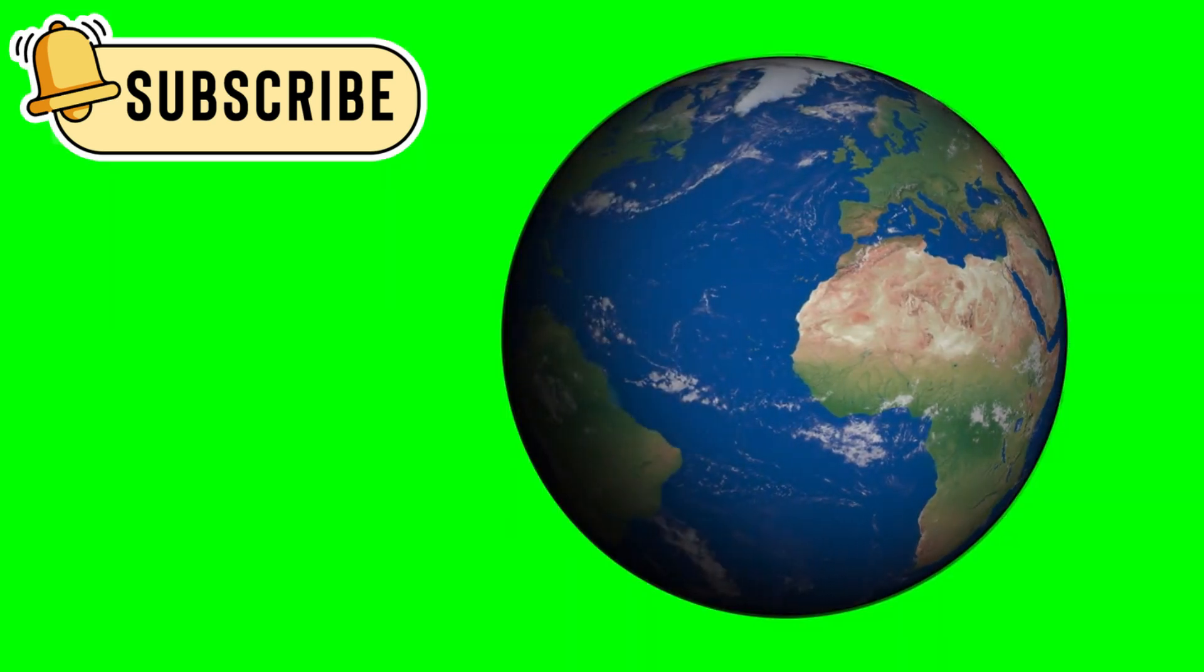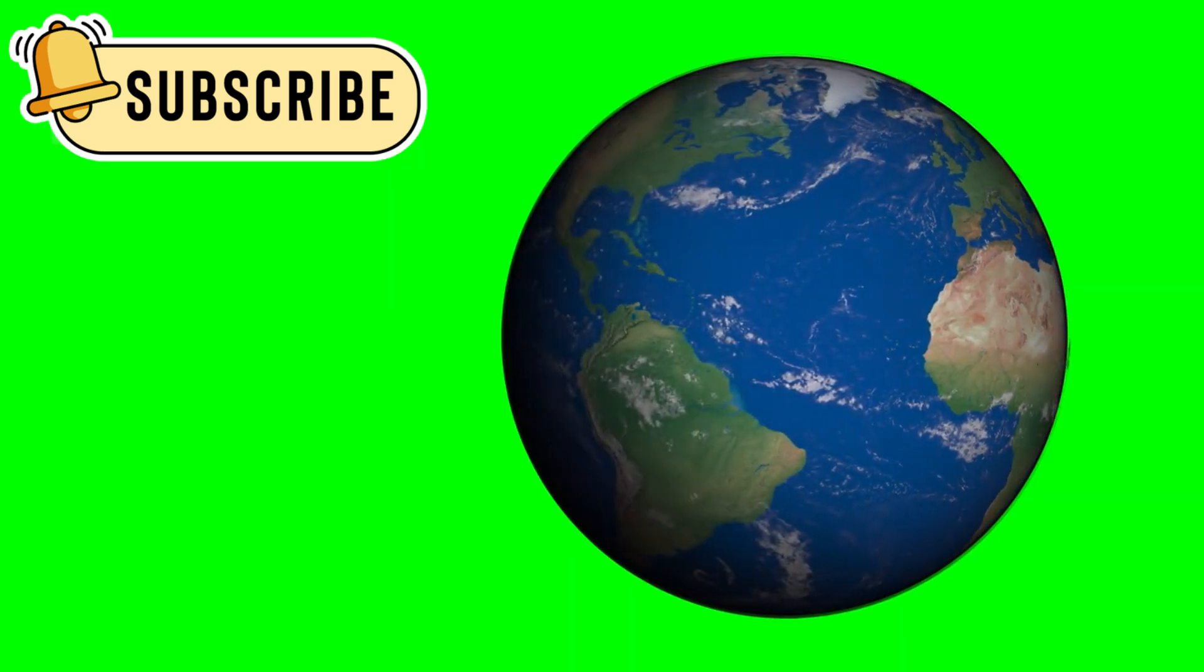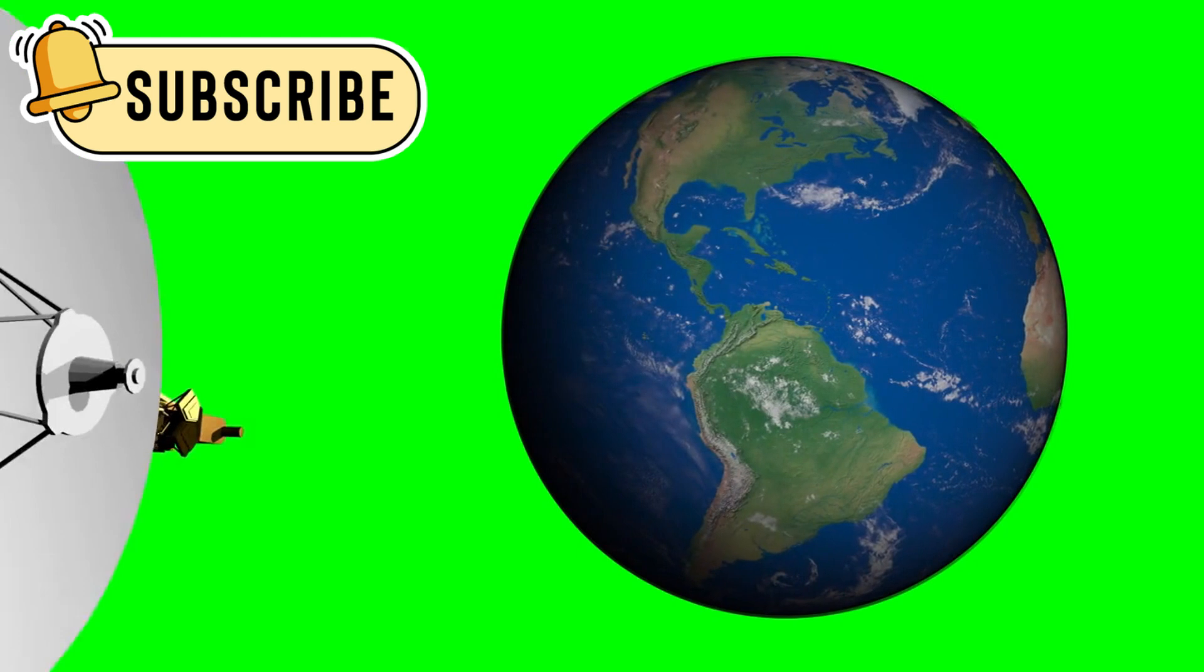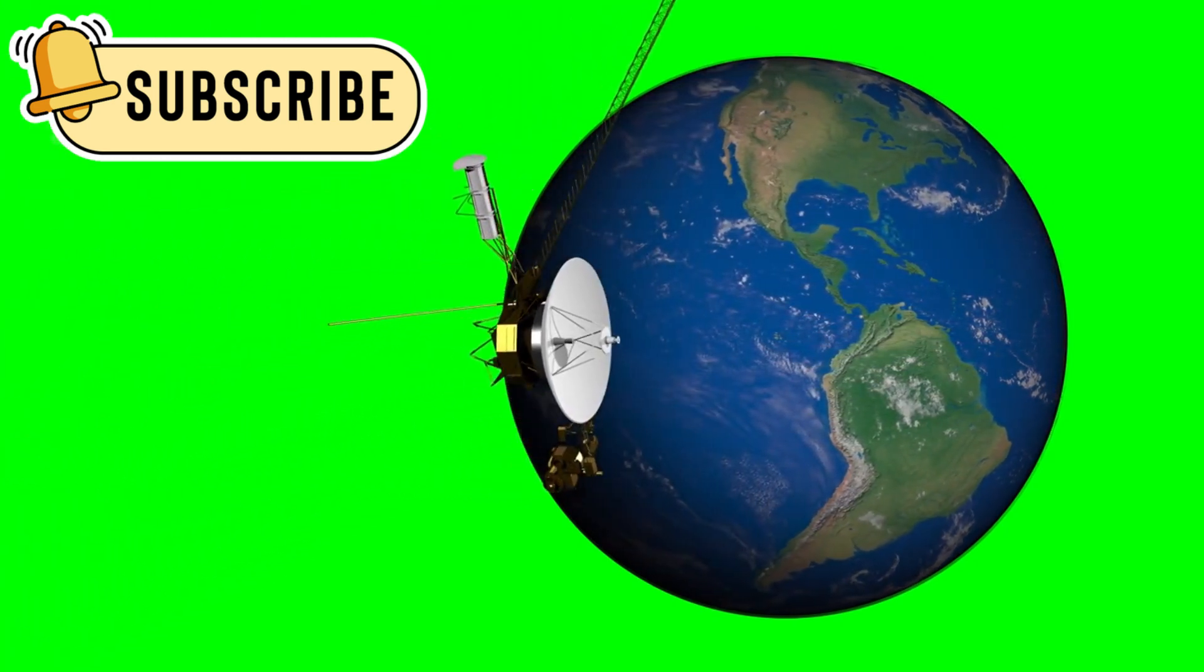As the spacecraft traveled farther from Earth, the distance caused delays, such as 18-hour wait times for signals from Voyager 2 to reach Earth. Additionally, the growing background noise from radios, televisions, and cell phones made it even harder to pick up the faint signals from these distant spacecraft.